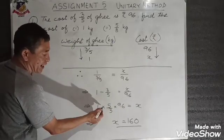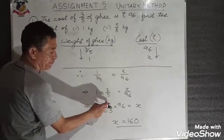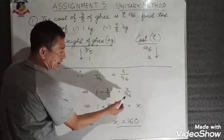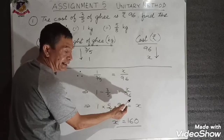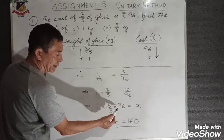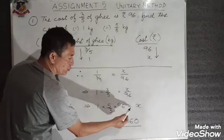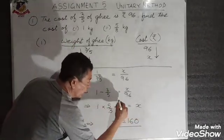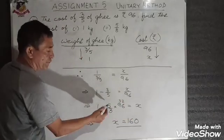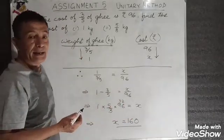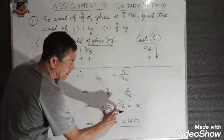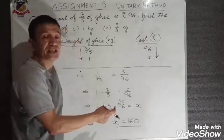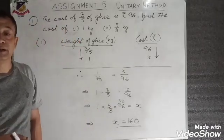In the next line, I do the reciprocal: 1 multiplied by 5/3. Now I bring 96 from the right hand side — since it is dividing, it moves to the left hand side and multiplies. So multiplied by 96 equals x. 3 goes into 96 thirty-two times, so 5 into 32 is 160. Therefore x equals 160.